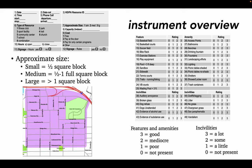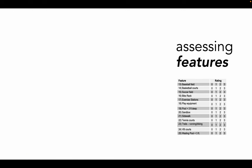For incivilities, you'll use the rating system to refer to the amount or volume of the issue rather than its quality, because we assume that incivilities, as a rule, detract from the resource. As part of the assessment, you'll look around the resource to locate what kinds of physical activity features it has and the quality of those features. The features listed in the tool already include baseball and soccer fields, basketball, volleyball, and tennis courts, bike racks, exercise stations, play equipment and sandboxes, trails and sidewalks, and swimming and wading pools.